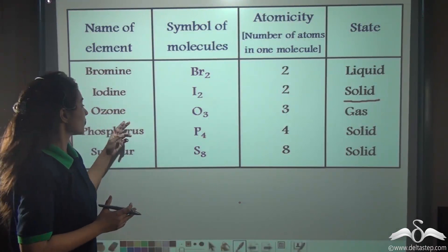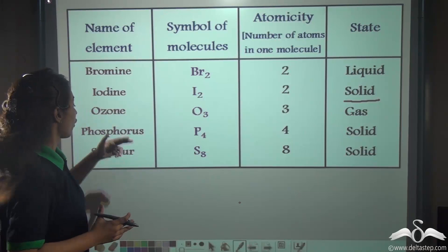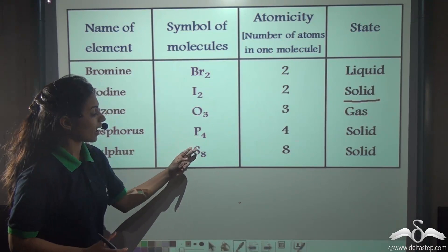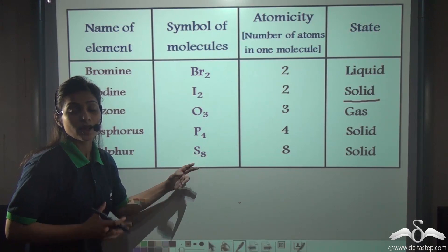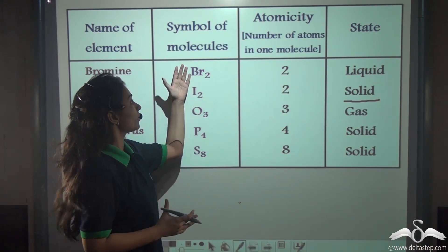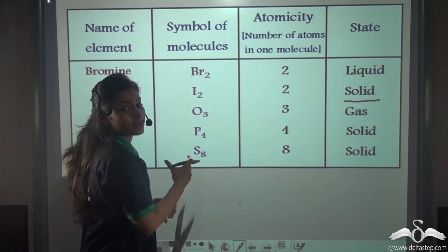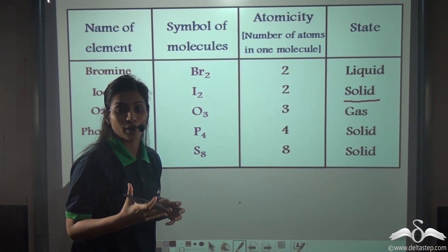Similarly, you can see the molecular formula of ozone, phosphorus, and sulphur are O3, P4, and S8 respectively. Now it would be very good if you memorize these molecular formulas so that you can use these in chemical reactions or writing equations as well.